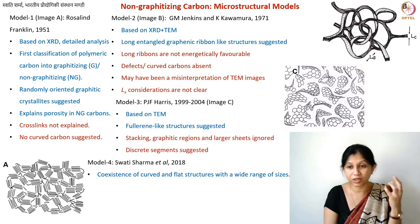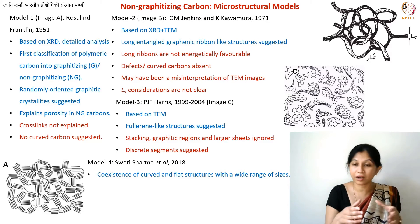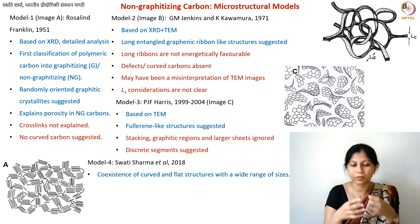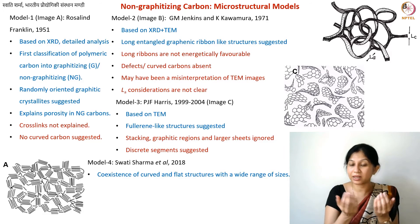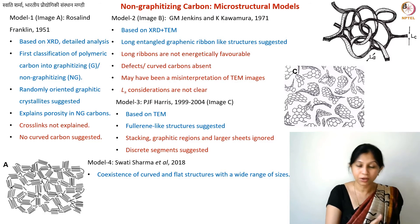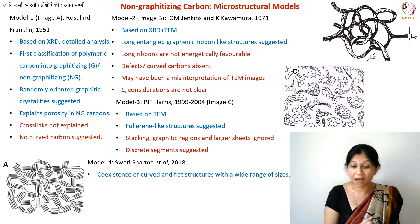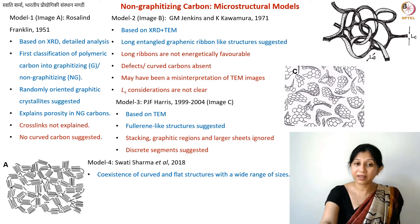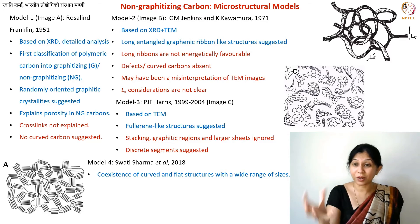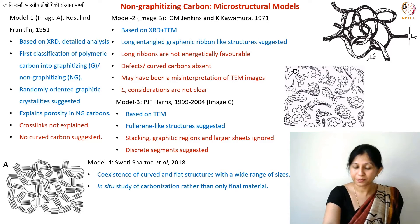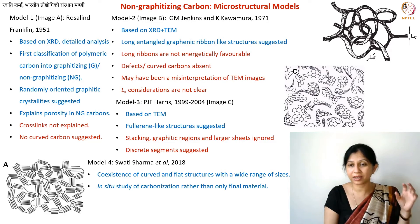To distinguish a disk from a fullerene, you look at stability: a disk would try to bond with or merge into a neighboring structure, whereas a fullerene is highly stable. Using other data in addition to TEM images helps interpret what is in these materials. Our model suggests a coexistence of curved and some flat structures, structures with very high curvature, and a range of sizes. An important aspect was that we did not just consider the final material — we observed how it is formed.